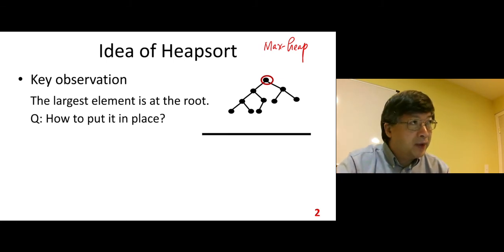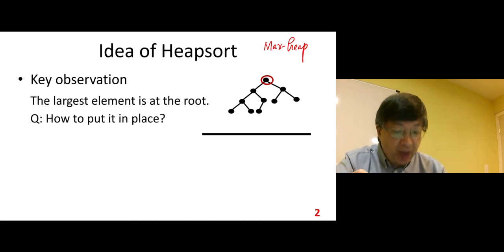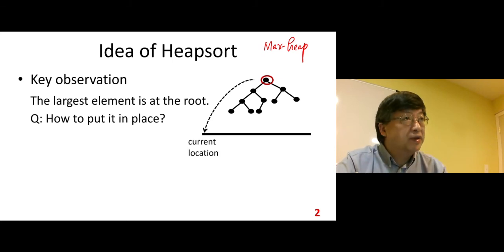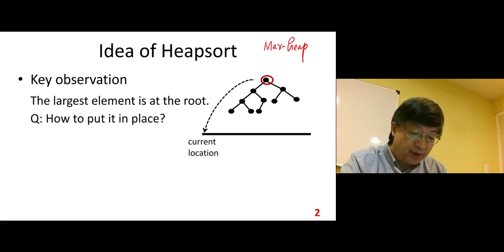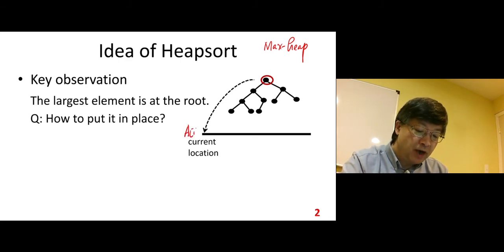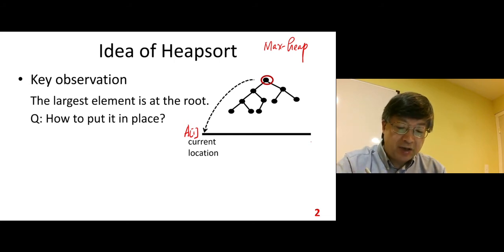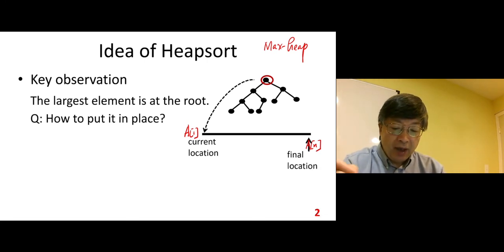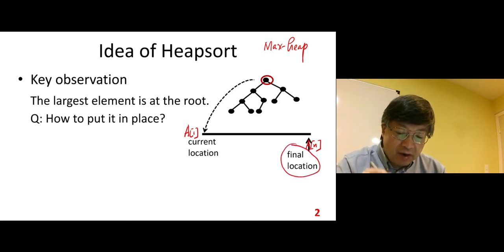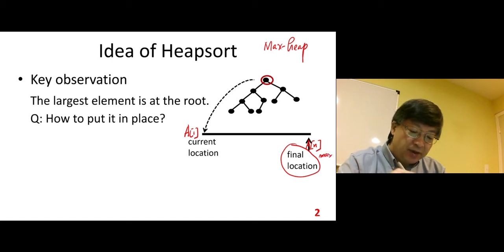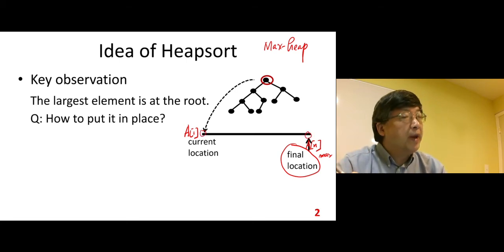Suppose this is an array. We use this array to store the heap. First, we know the root corresponds to the first element in the array — A of 1. The last element is A of N. And we know the largest element: the final location for the largest element should be at the end. So current location is A[1], the final location is A[N] — how do we make that change?